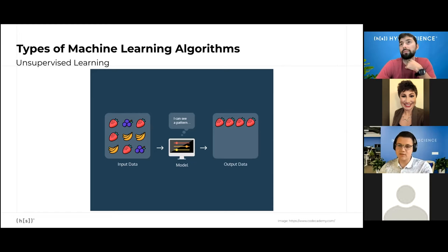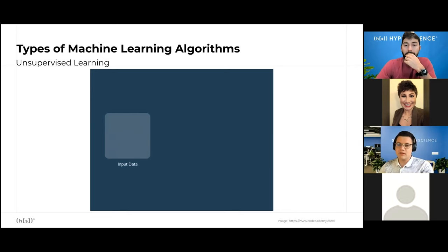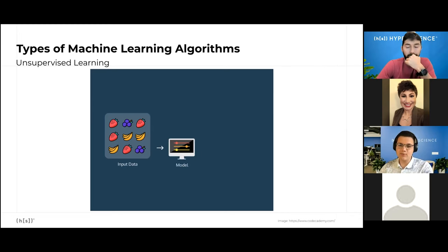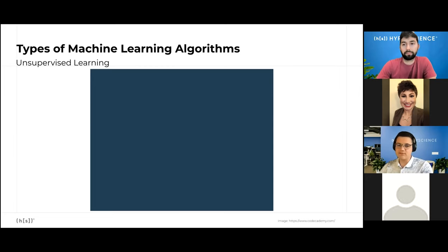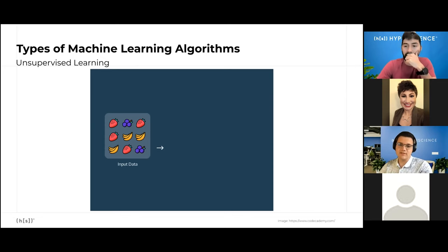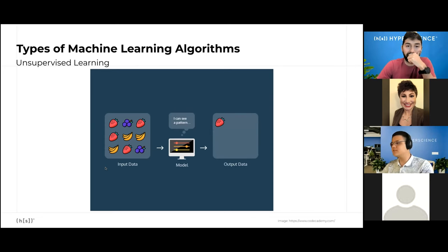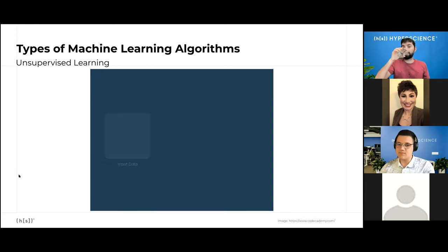The training dataset is a collection of examples without a specific outcome or correct answer. The algorithm then attempts to automatically find structure or some features in this data and analyze it, then cluster it. The two most common unsupervised learning problems are clustering and anomaly detection. In our case, we have strawberries, blueberries, and bananas which don't have labels to them. The machine learning algorithm tries to find the similar features of each of the categories and tries to group them in a number of categories we give it.